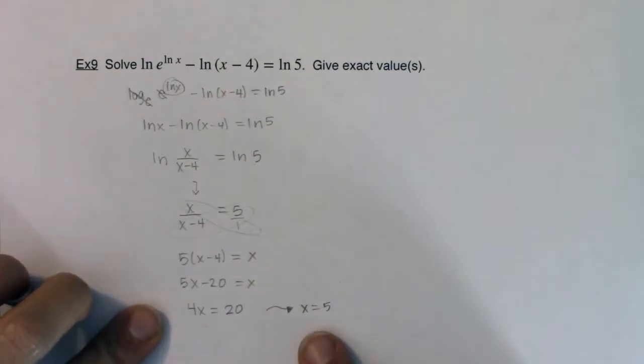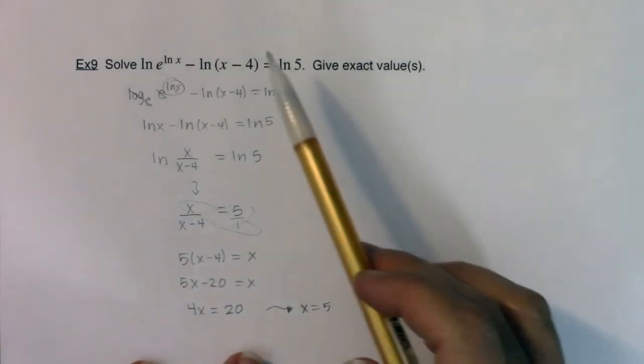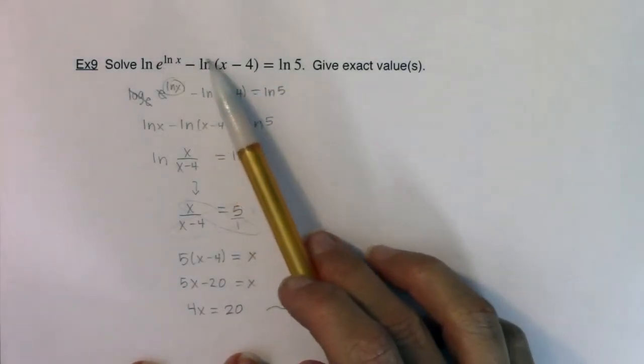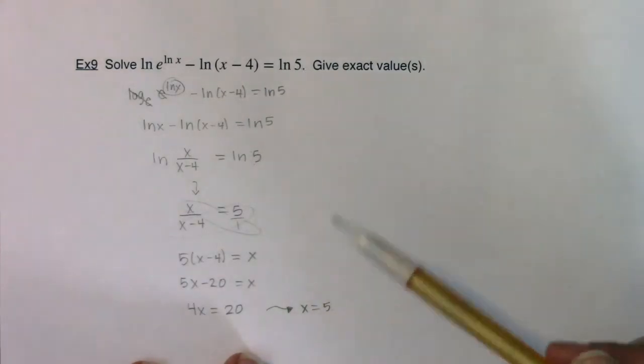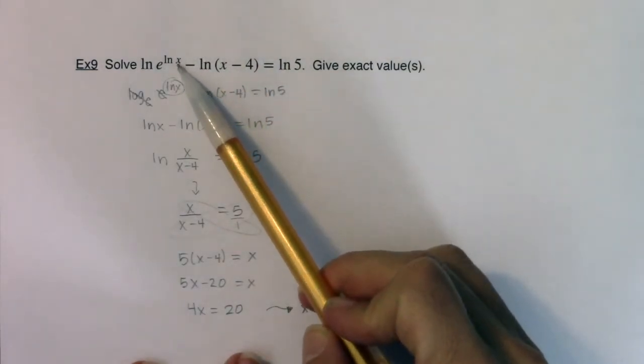Now before I check that off and say that's it, that's my answer, just plug this back in and make sure it doesn't make any of the arguments in your original function 0 or negative. So if I plug 5 in, that argument is going to be positive, so great.